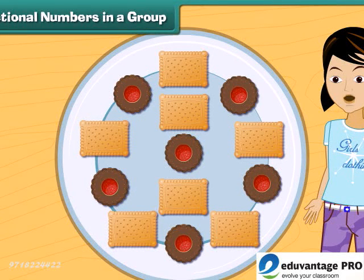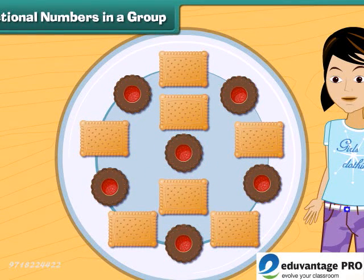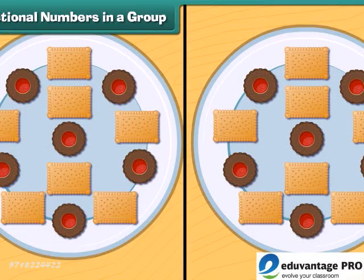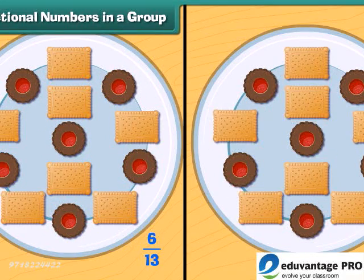Remember, we can also use fractional numbers to talk about items in a group. Let's see — there are 13 biscuits on this plate, so that's our denominator. But the biscuits are not the same type. Six of them are chocolate biscuits, whereas seven of them are milk cream biscuits — those are the numerators. Therefore, we can say that six thirteenths are chocolate biscuits and seven thirteenths are milk cream biscuits.